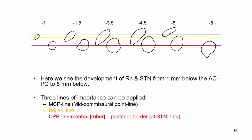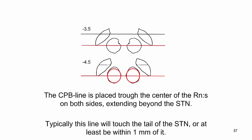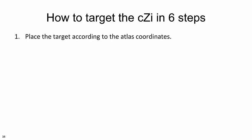Here we see the development of the red nucleus and the STN from 1 mm to 8 mm below the ACPC plane. Three lines of importance can be applied: the MCP line, the Bejane line, and the CPB line. The CPB line is placed through the center of the red nucleus on both sides, extending beyond the STN; typically this line will touch the tail of the STN or be within 1 mm of it. I target the calozona inserta in six simple steps.